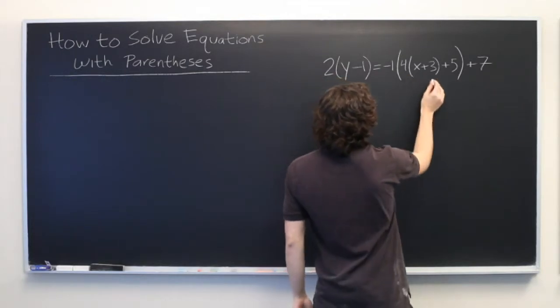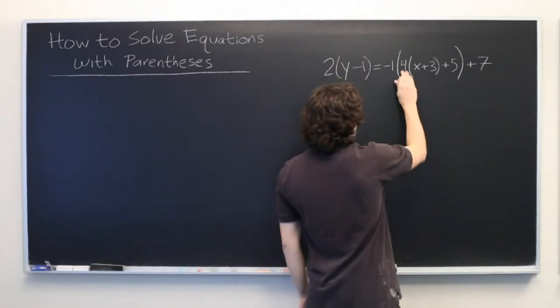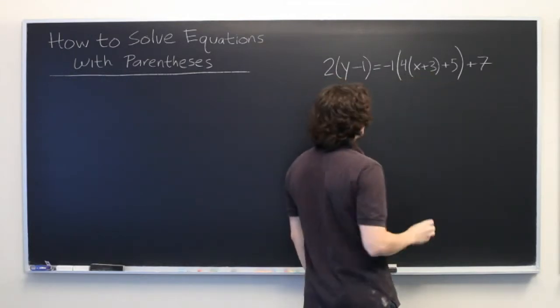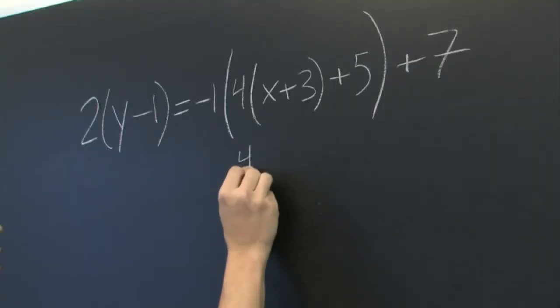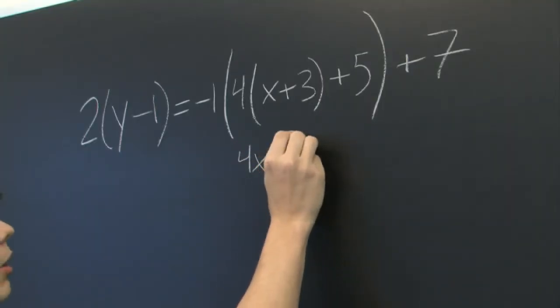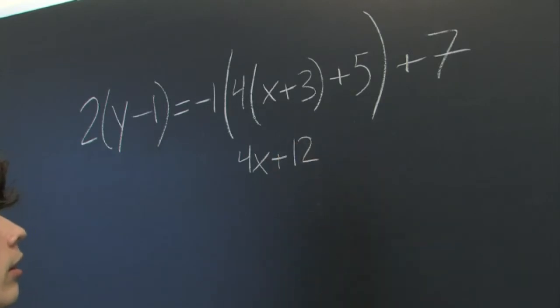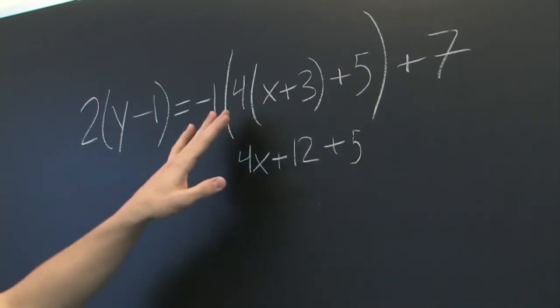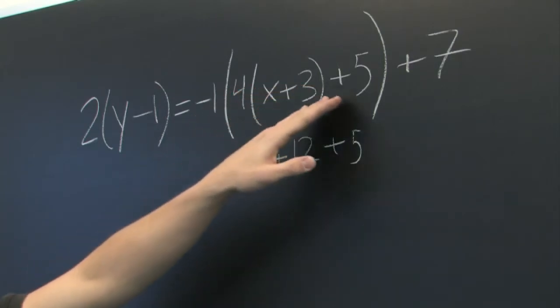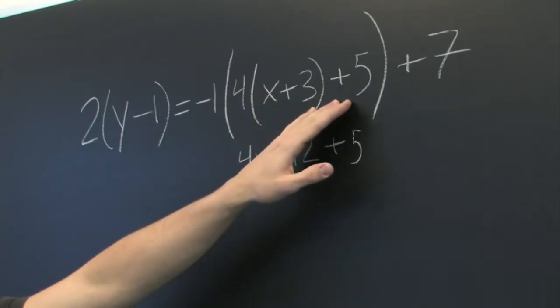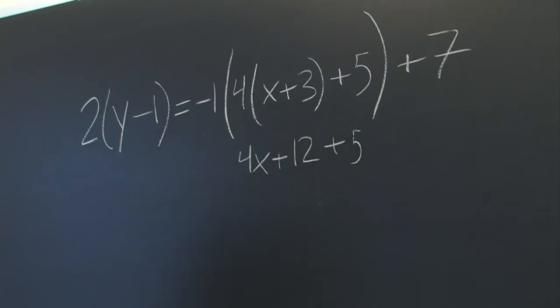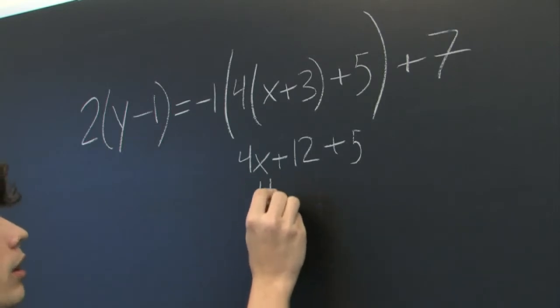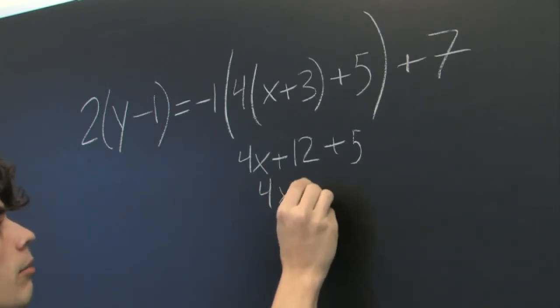So 4 times x plus 3. Let's start by distributing the 4 across these two. We get 4x plus 12 and here we keep plus 5. Note that this coefficient here does not apply to the 5 on the end because it's not inside these parentheses. We can simplify this further by adding 5 and 12 together, and we get 4x plus 17.